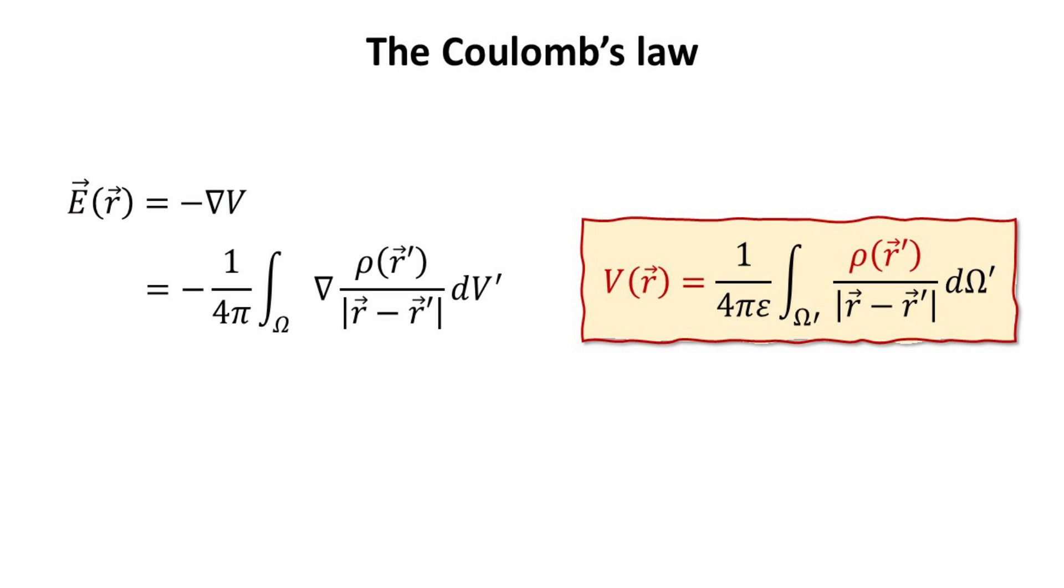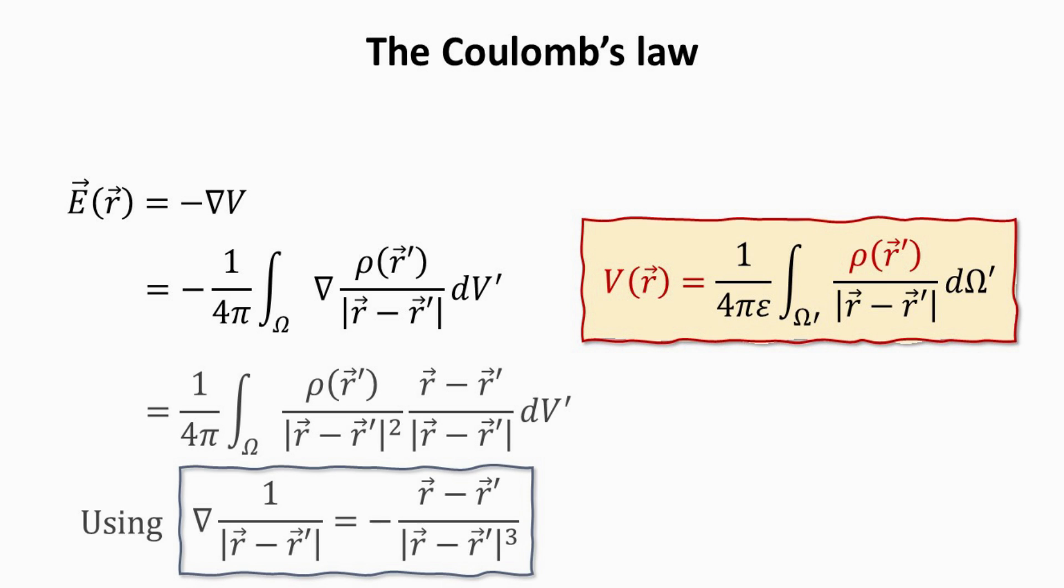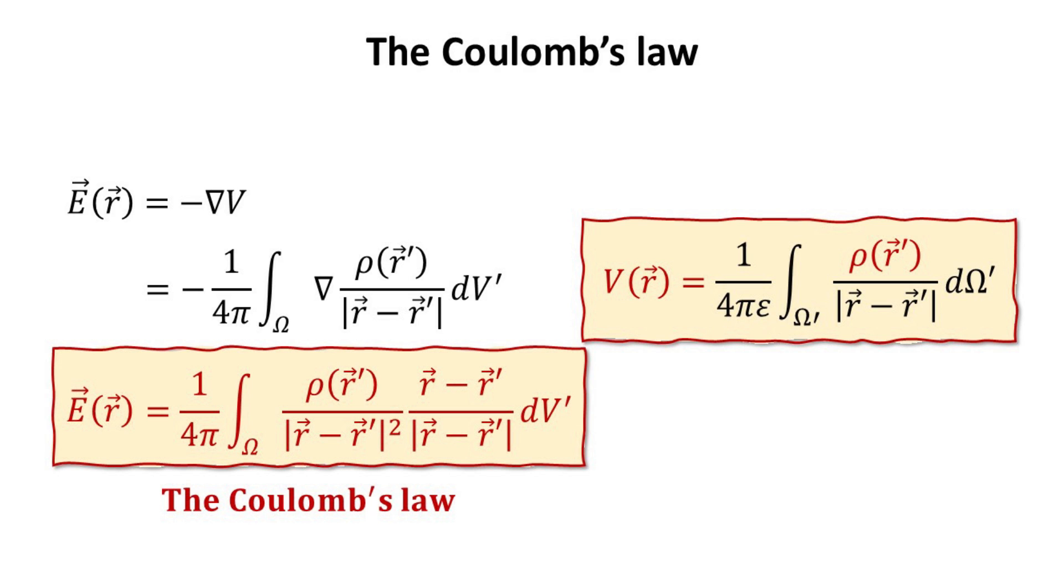Finally, the electric field can be derived from the gradient of the electric potential. To arrive at the final result, we need to take the gradient in the integrand. Note that the gradient is with respect to R and not R prime. This can be easily evaluated using the identity as shown. Thus, we obtained the well-known Coulomb's law in electrostatics.